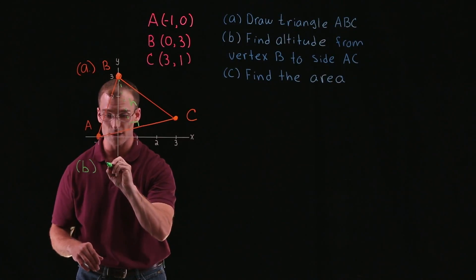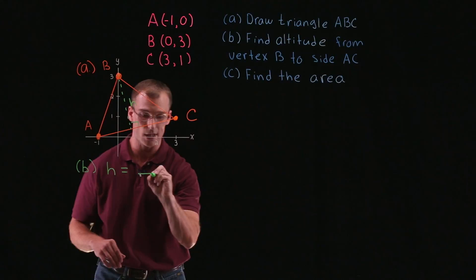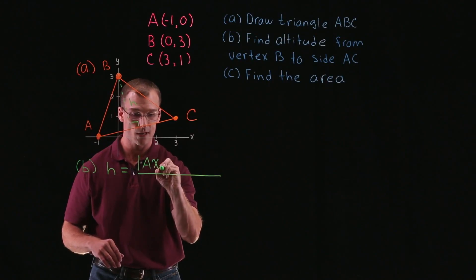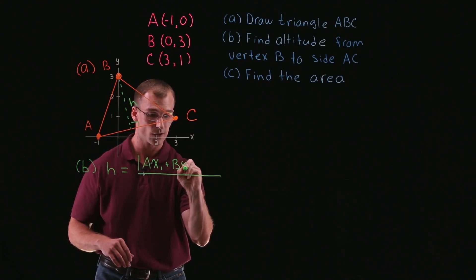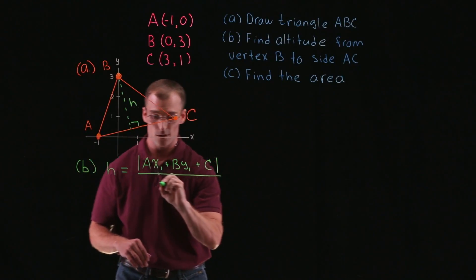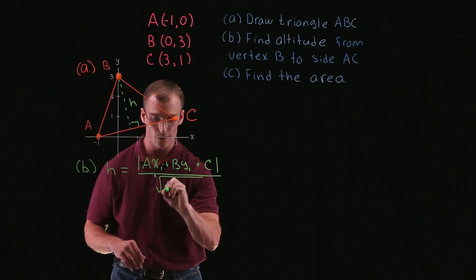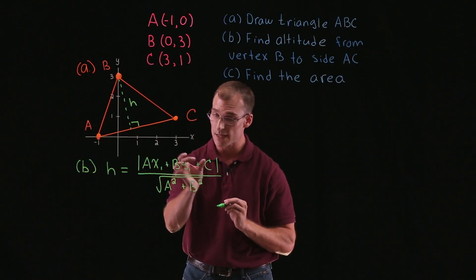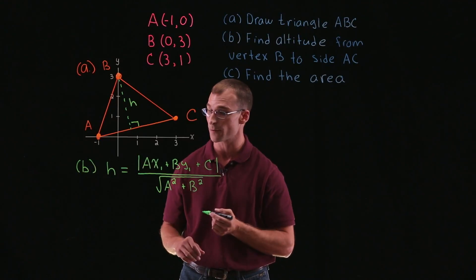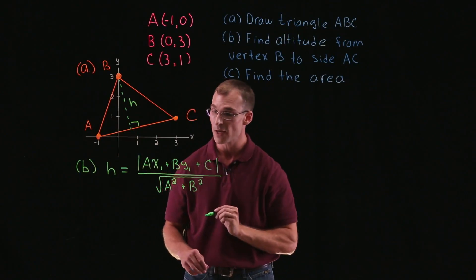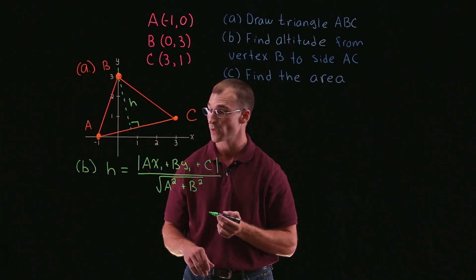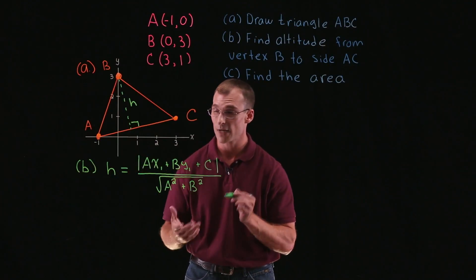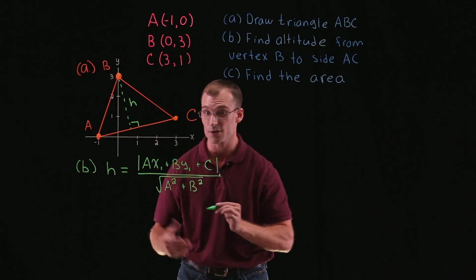So H — the distance from a point to a line — is given by the absolute value of capital A times x1 plus B times y1 plus C, divided by the square root of A squared plus B squared. Where capital A, B, and C are the coefficients from the equation of the line in standard form — that would be the line going through points A and C. And x1, y1 are the coordinates of the point we're finding the distance from. We know the coordinates of B, so what we need to find is A, B, and C — namely the equation of line AC in standard form.